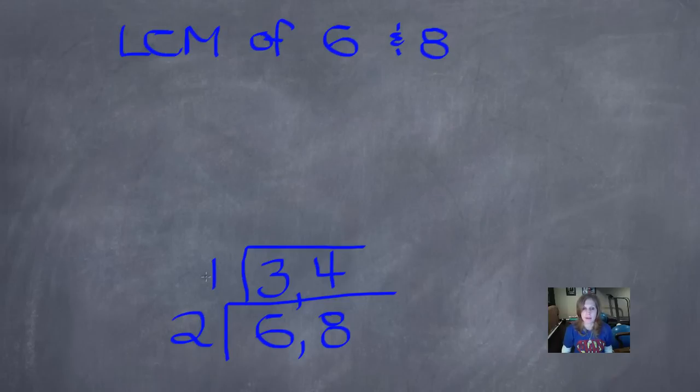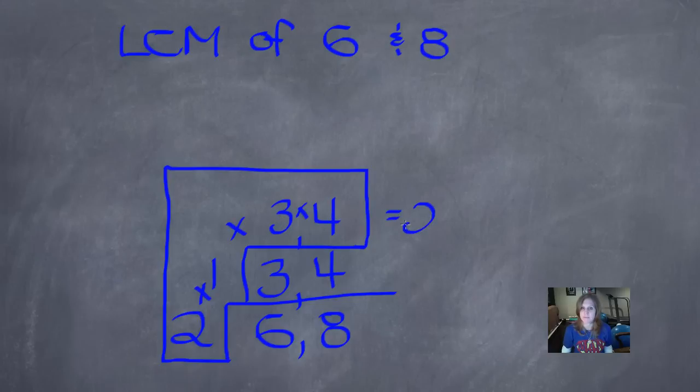Next layer. What divides evenly into both 3 and 4? 1 is the only thing. 1 goes into 3 three times. And 1 goes into 4 four times. I've repeated those two things just like with simplifying, so I know that I'm done with my cake. But I'm not done finding my LCM. So I'll draw my L around all of those numbers and multiply them all together. 2 times 1 is 2, 2 times 3 is 6, and 6 times 4 is 24. So my LCM equals 24.